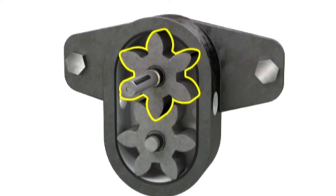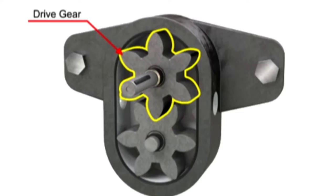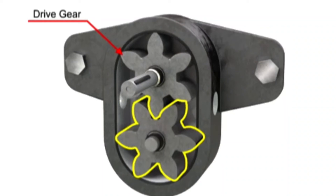One gear is driven by a motor connected to a shaft. This is called the drive gear because it is driven by a motor and it in turn meshes with and drives the movement of the second gear.